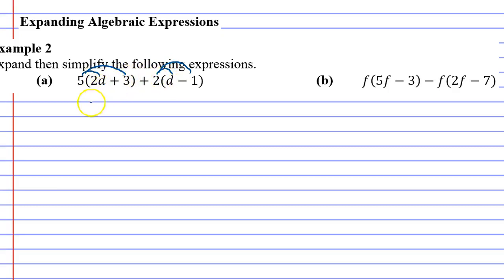So 5 times 2d is 10d and 5 times 3 is 15, so we've got to put a plus between them. And then we've got 2 times d which is 2d, and 2 times negative 1 is negative 2. All right, so we've just done our expansion.